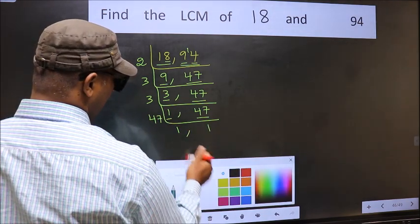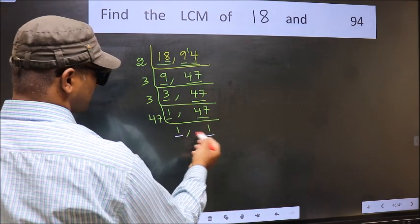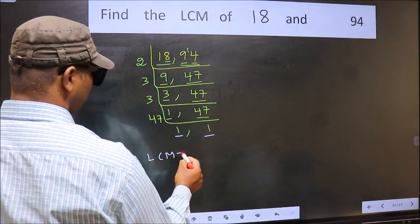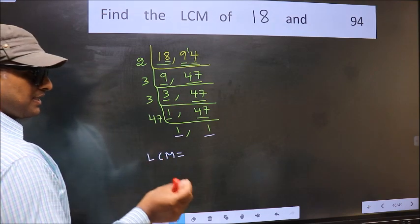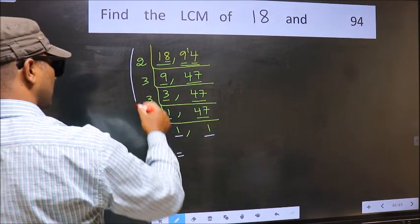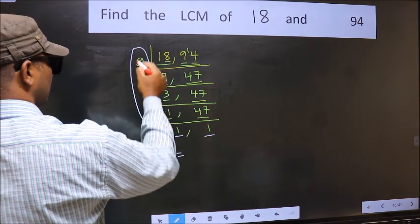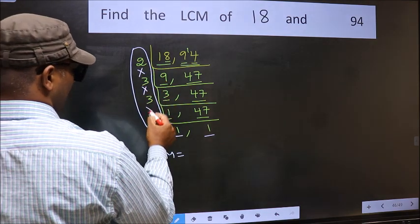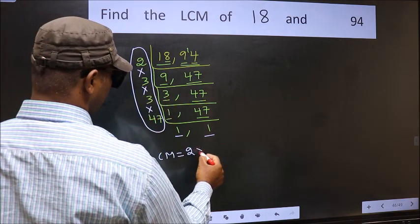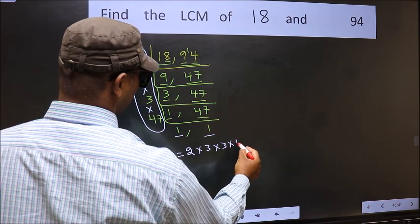So we got 1 in both the places. So our LCM is the product of these numbers. That is 2 into 3 into 3 into 47.